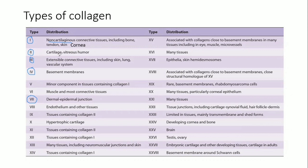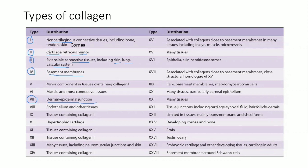Type 3 collagen is mainly present in extensible connective tissues like skin, lung, and also the vascular system such as blood vessels. Type 4 is mainly present in basement membranes — the basement membrane of the kidney, the eye, and the internal ear. Type 7 is present at the dermal-epidermal junction. These are the 5 most important collagens to remember.